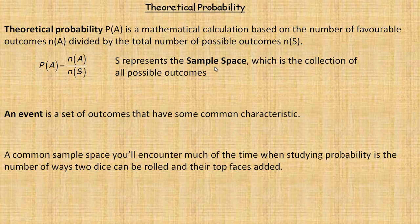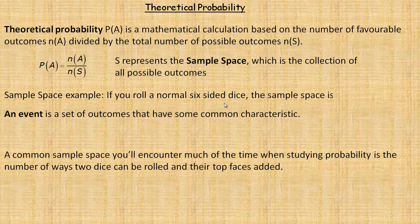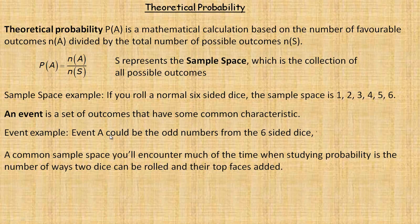So the sample space is the collection of all possible outcomes. Here's an example of a sample space. If you roll a normal six-sided die, the sample space is 1, 2, 3, 4, 5, 6. Now, an event is a set of outcomes that have some kind of a common characteristic. For example, event A could be the event that you get odd numbers from the six-sided die. So the event A would contain the outcomes 1, 3, and 5.